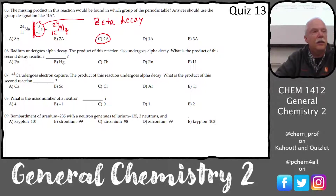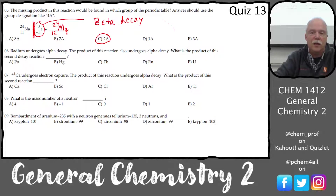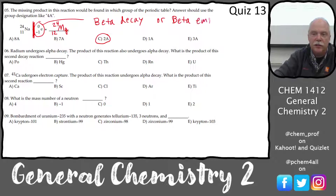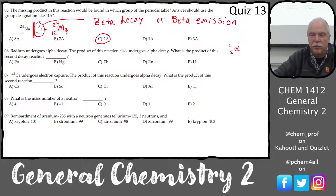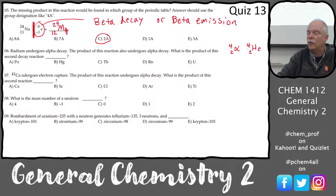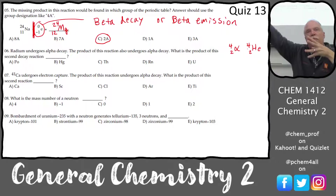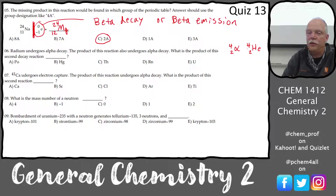Beta emission or beta decay — those are the same. An alpha particle would be 2 and 4, which is the same as a helium nucleus. Alpha is always the helium because it's two protons — it's just like a helium nucleus being spit out of a bigger nucleus.